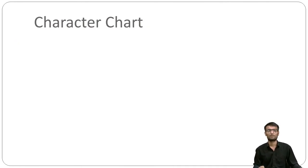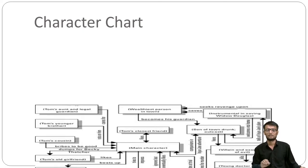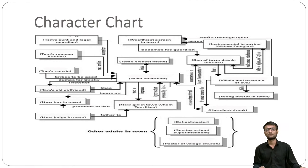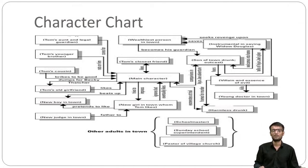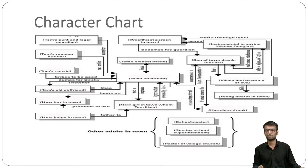Now let's look at the character chart. The character chart in the novel is very complex because in the 18th century, the characters described belong to both the upper strata and the lower strata of society. Tom Jones has connections with many multiple characters. In this chart you will find every connection between every character, so kindly look at it very carefully.